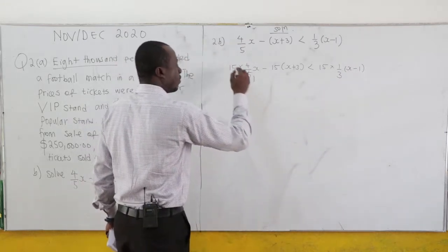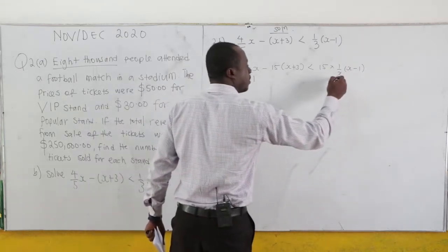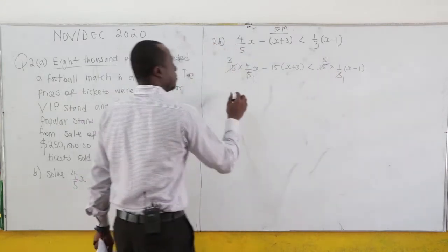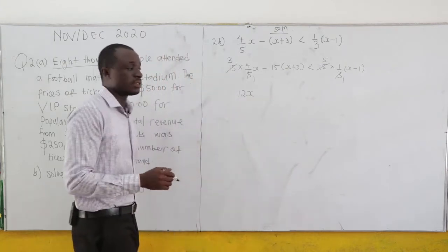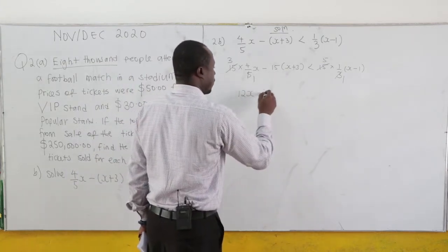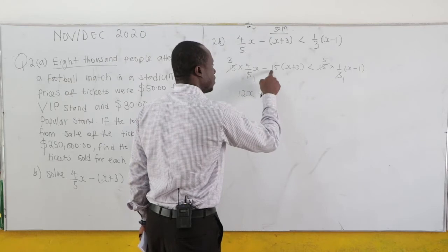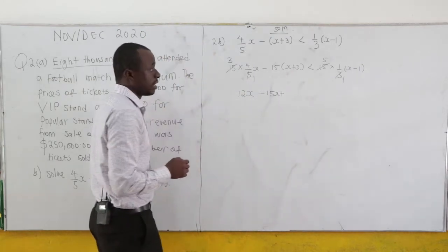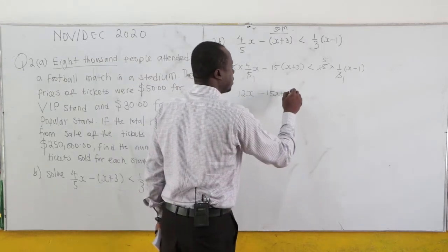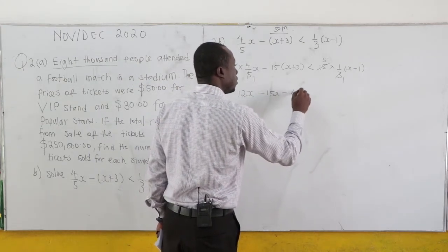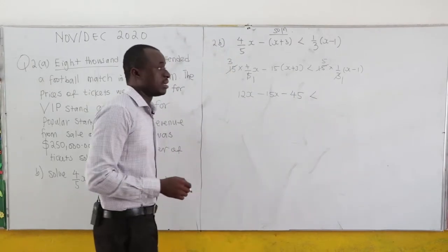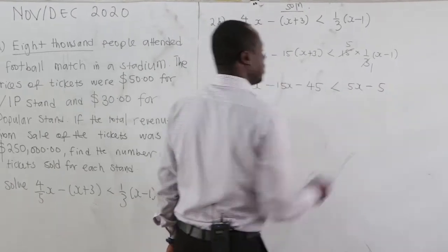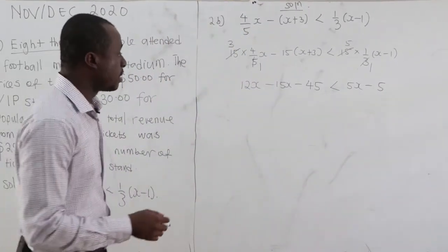Now, 5 goes into 15 three times, giving 3 times 4, which is 12X. And 3 goes into 15 five times. We shouldn't forget to bring the X. Negative 15 times 3 is negative 45. On the right-hand side, 5 times X is 5X, and 5 times negative 1 is negative 5. Now we group like terms.